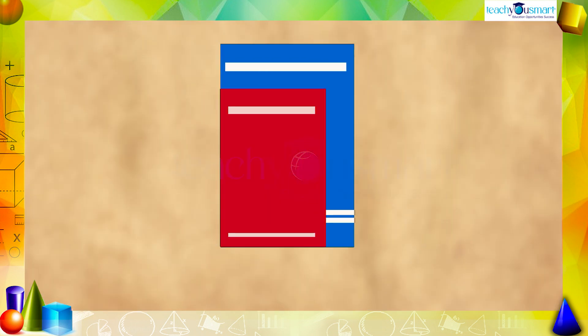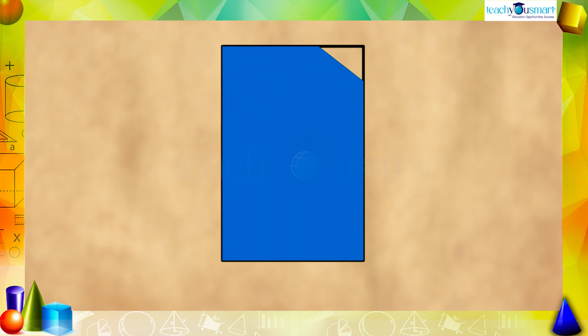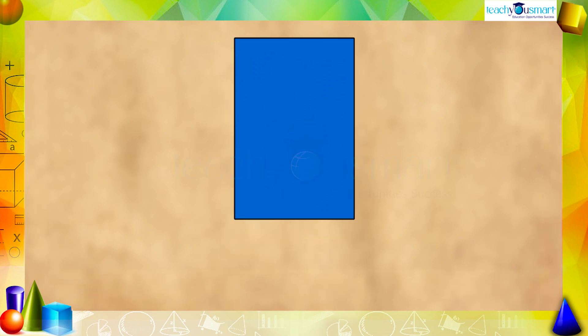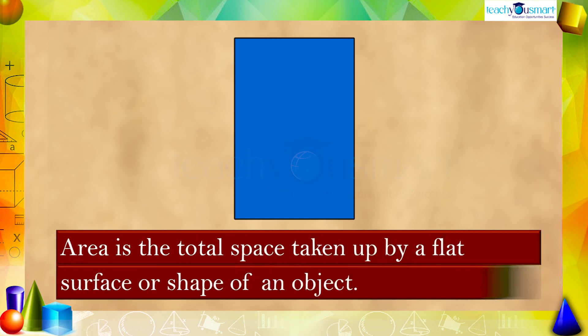While comparing the outlines of these two books, we can see the paper in the blue book has more space than that in the red. That's why she took the books of larger size. That space is termed as the area of the paper — that is, the area is the total space taken up by a flat surface or shape of an object.